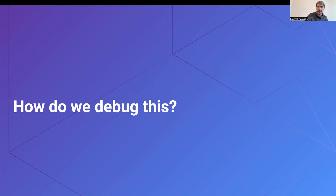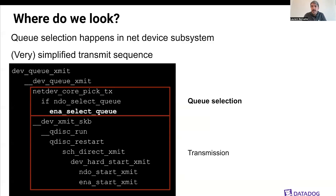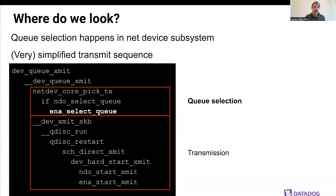So how do we debug this? The first question was where to look. We looked at the network call stack for sending packets to see where queue selection was happening — and it's happening in the net device subsystem. Here is a very simplified transmit sequence: we have two steps — first, queue selection, then transmission. What's interesting is that queue selection uses the select_queue function provided by the ENA driver, which we use on AWS. Once the queue has been selected, we go through all the transmit code including queue discipline management and the actual physical send — but at that point, we won't change the queue.